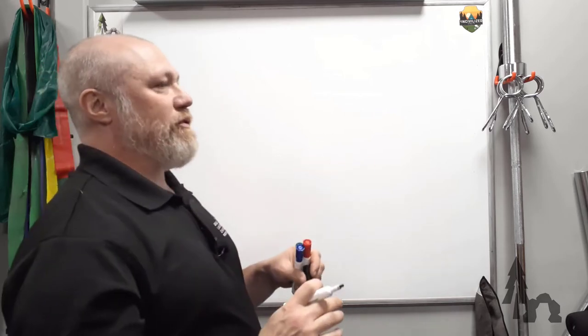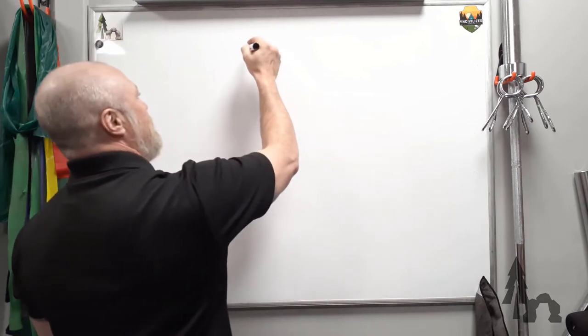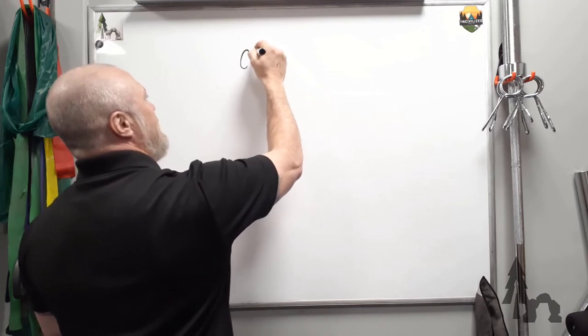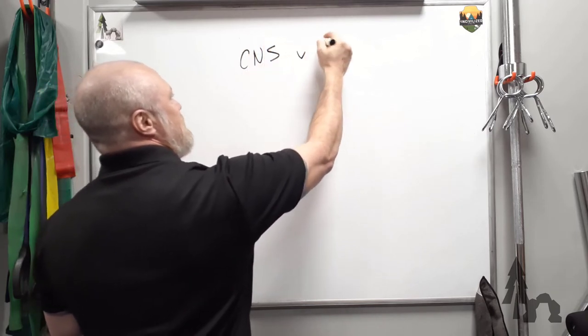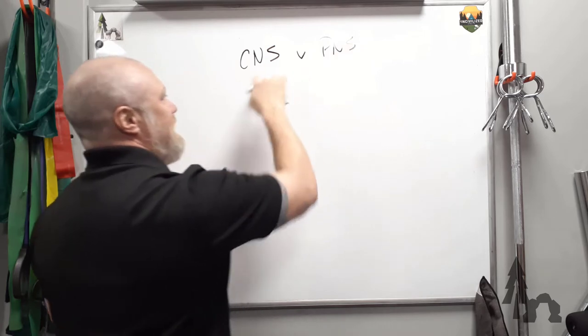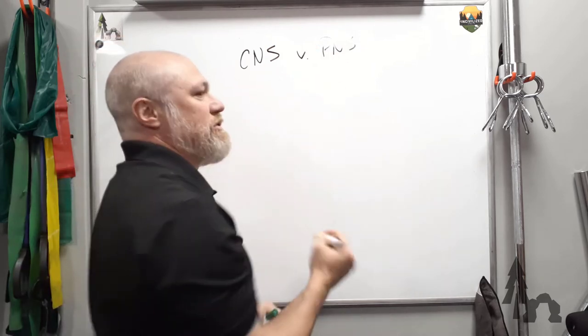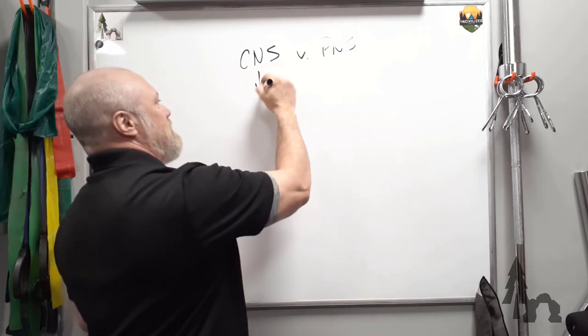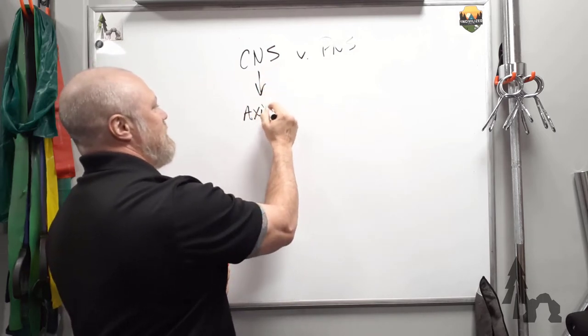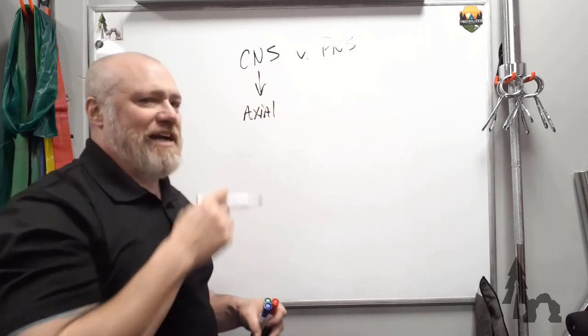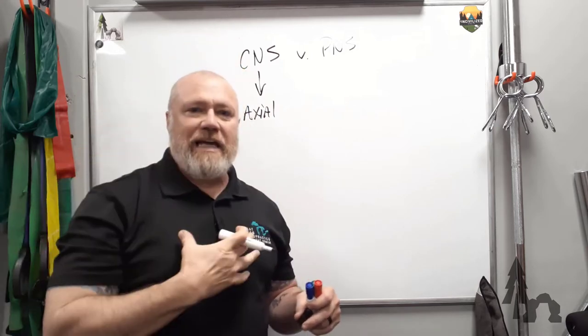First thing we want to talk about is there are different ways to divide talking about your nervous system. One is the CNS versus PNS. The CNS will stand for central nervous system versus your peripheral nervous system. The central nervous system is everything that's contained inside your axial skeleton. Your axial skeleton is your midline structures.